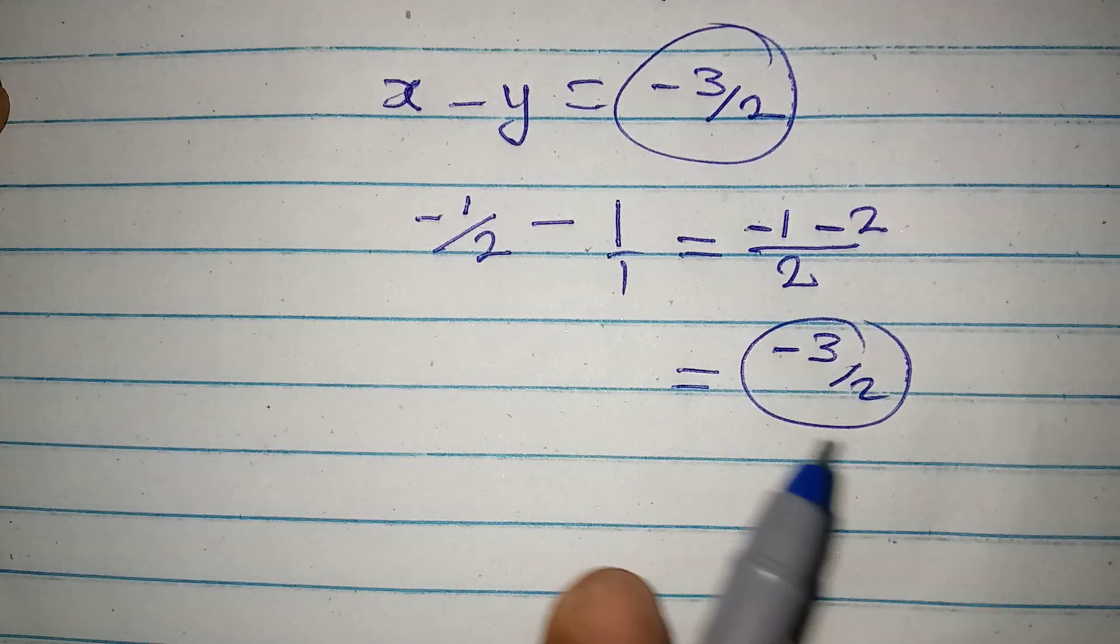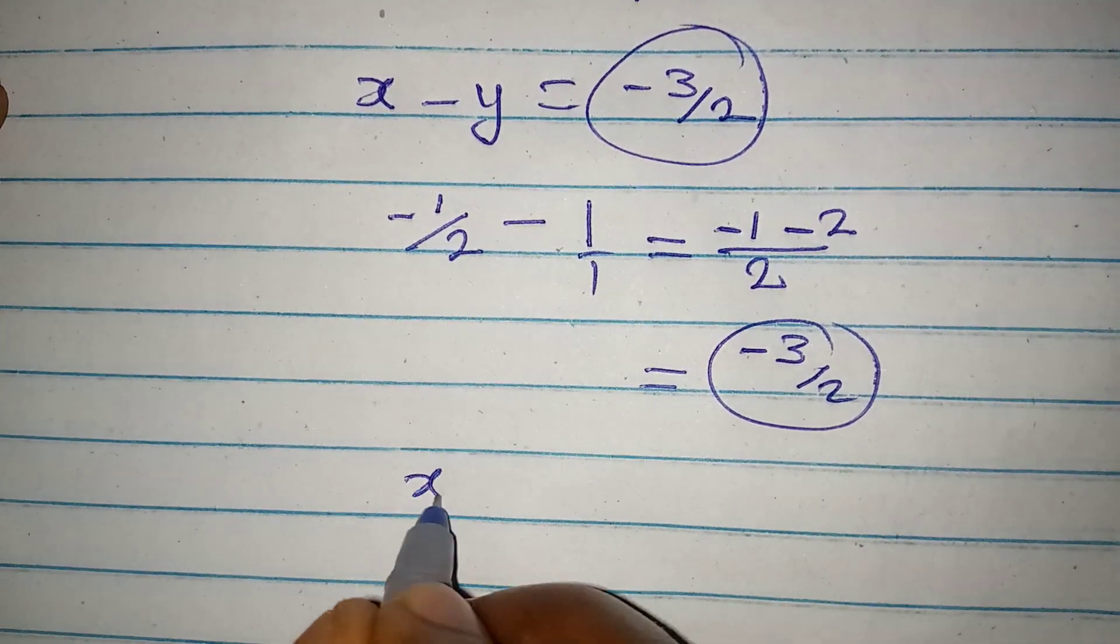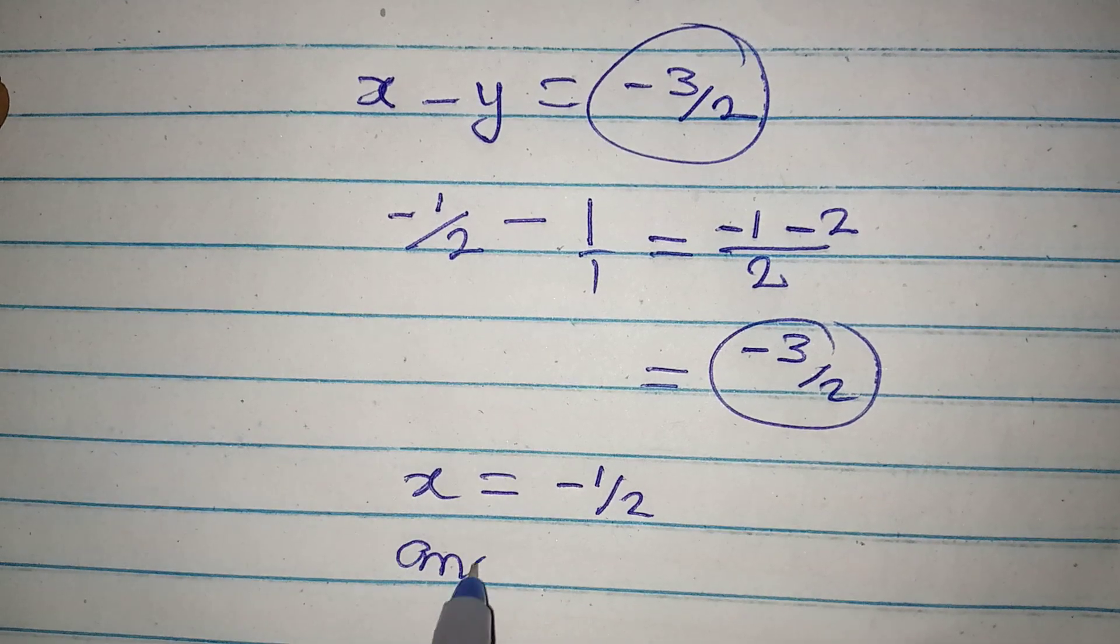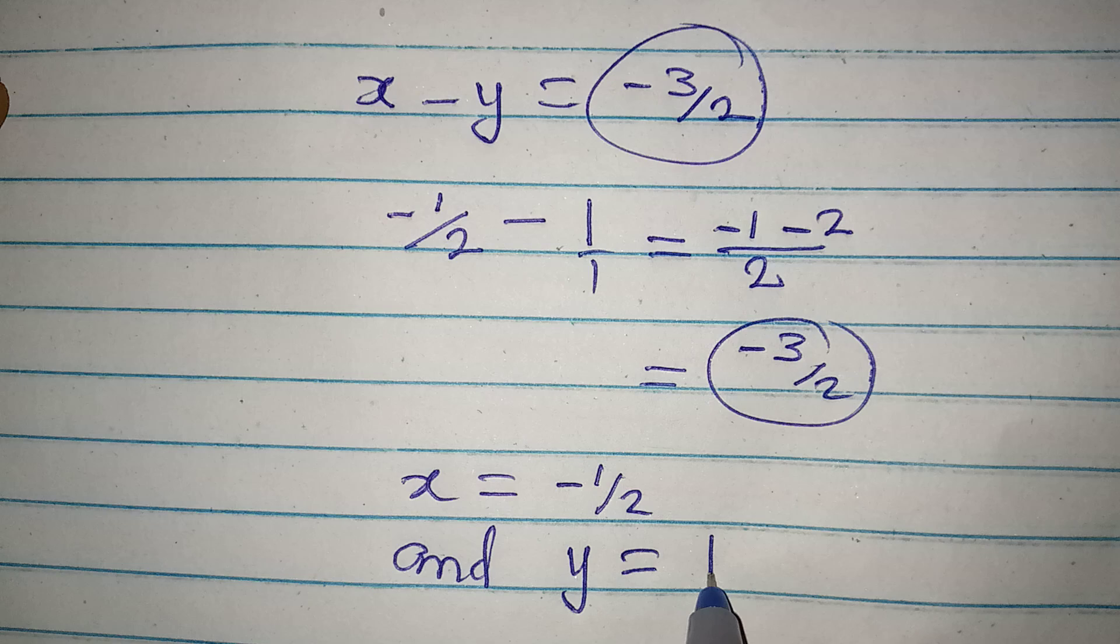So we have confirmed that x is equal to negative 1 over 2, and y is equal to 1.